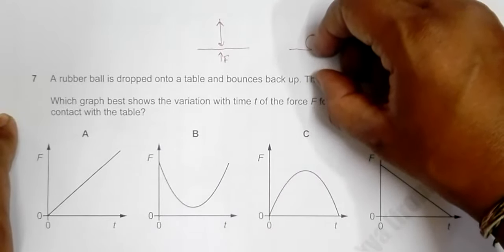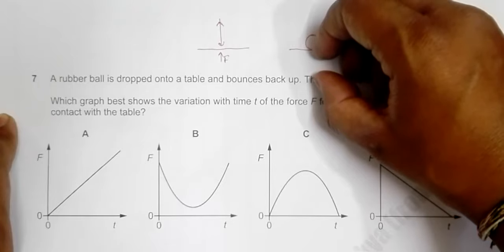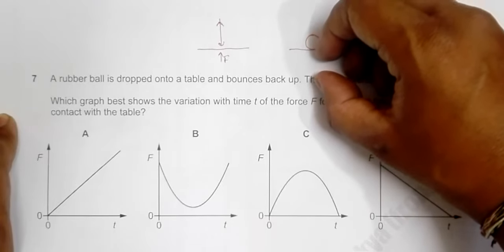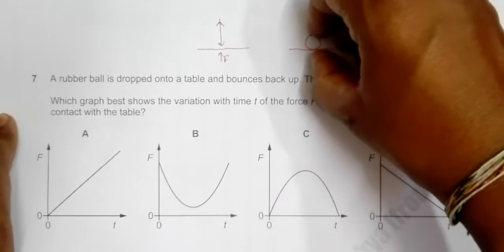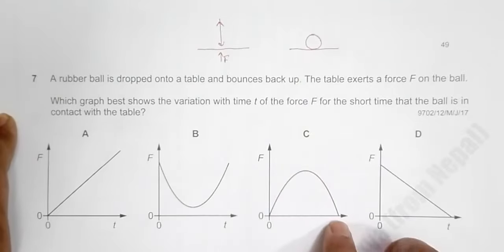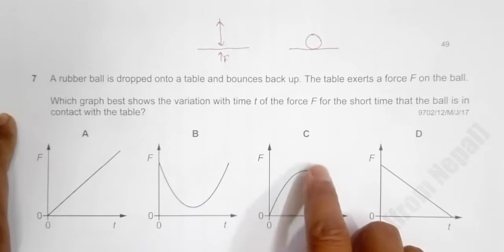Then it reaches the minimum height and starts to expand again. When it starts to expand, the force starts to decrease. And when it fully expands and rises up, the force becomes zero.